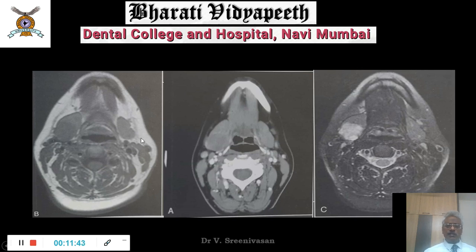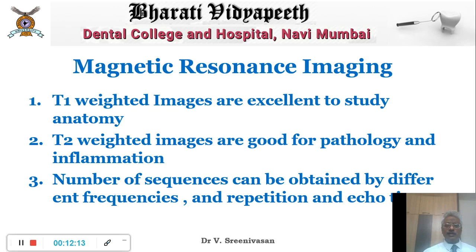Now we have three images — one of these is actually a CT scan. When bone is white, it is a CT scan. When the center of the bone is white and the surrounding is black, it is MRI. Here is a T1 weighted image showing a salivary gland tumor, and the T2 weighted image delineates it in a much more distinctive manner. Minimum T1 and T2 weighted images are obtained for all soft tissue sections, with further sequences for specific conditions like the temporomandibular joint.